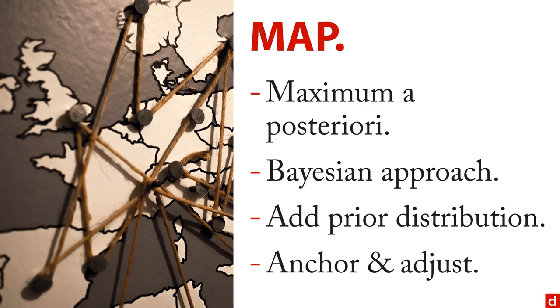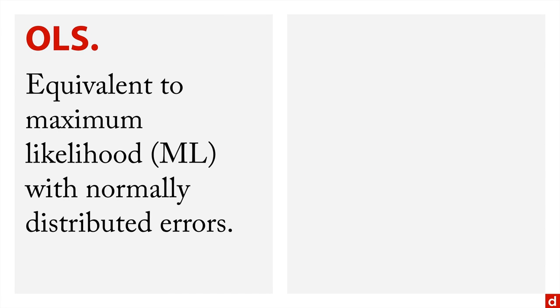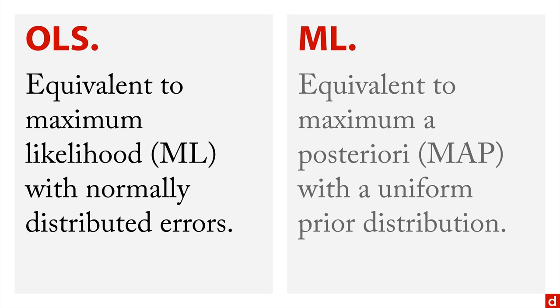What's interesting is that these three methods all connect with each other. Let me show you exactly how they connect. The ordinary least squares, OLS, this is equivalent to maximum likelihood when it has normally distributed error terms. And maximum likelihood, ML is equivalent to maximum a posteriori or MAP with a uniform prior distribution.